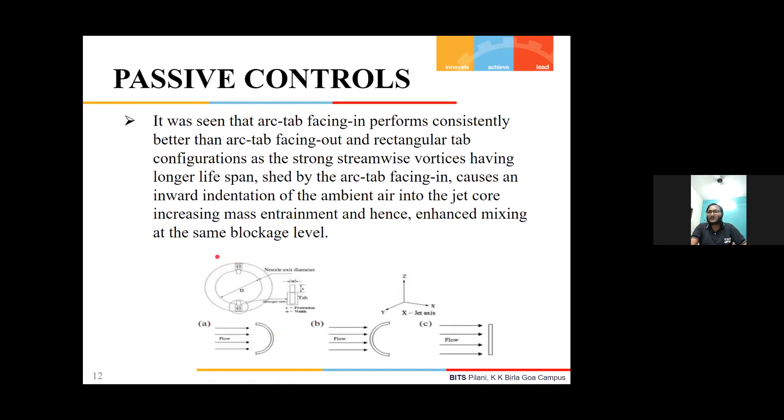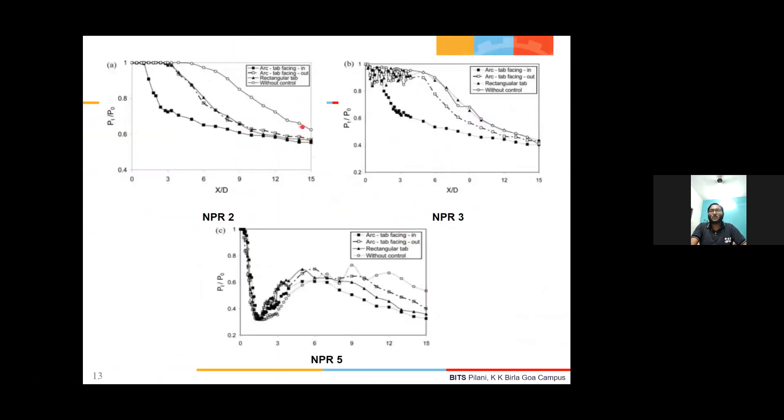Here we can see different flow regimes for the arc tab facing in, arc tab facing out, and rectangular tabs. Graphs were plotted through the experiments at different NPR levels for the pressure gradient. NPR stands for the pressure ratio of the pressure at the settling chamber to atmospheric pressure. From these graphs we can see how the pressure drop is larger for arc tab facing in compared to arc tab facing out, rectangular tabs, or without any tabs, resulting in better mixing.